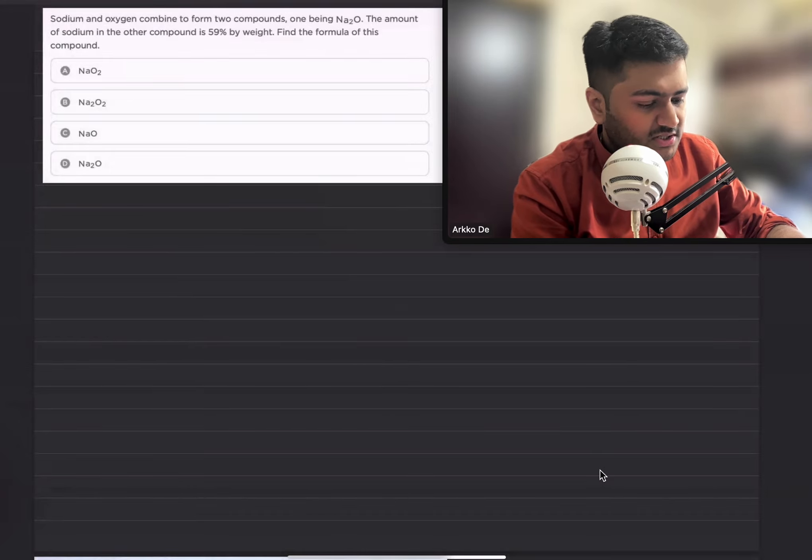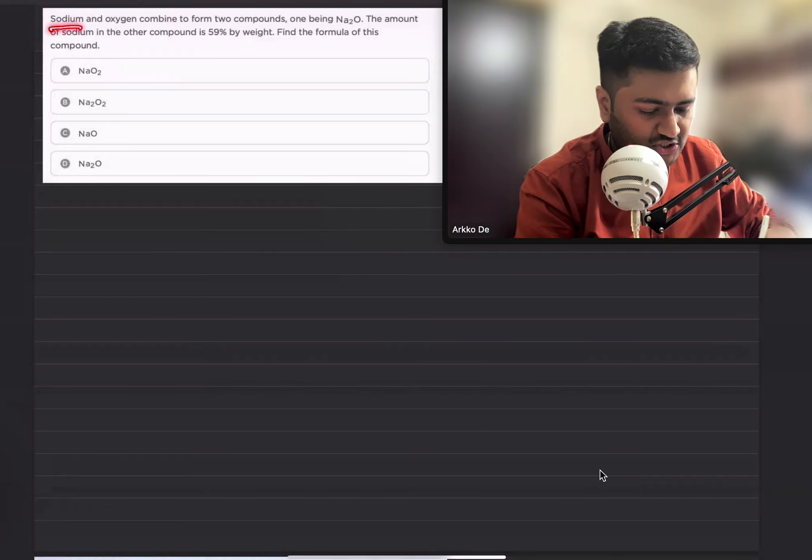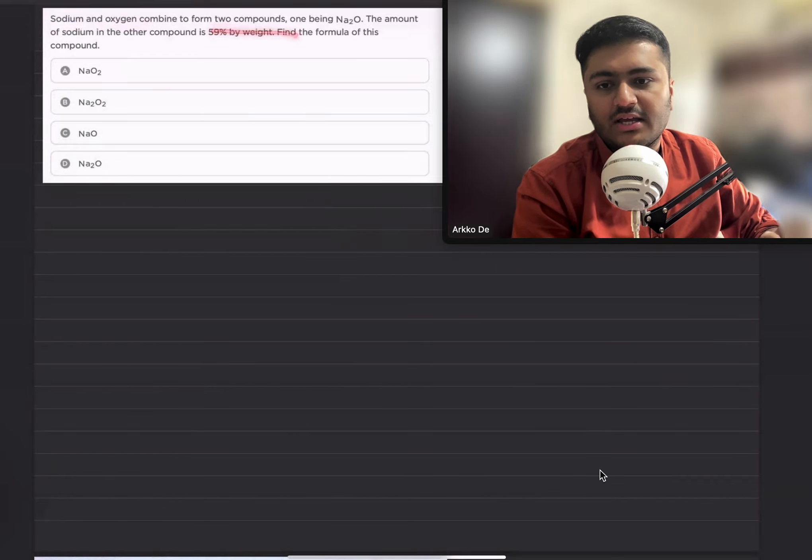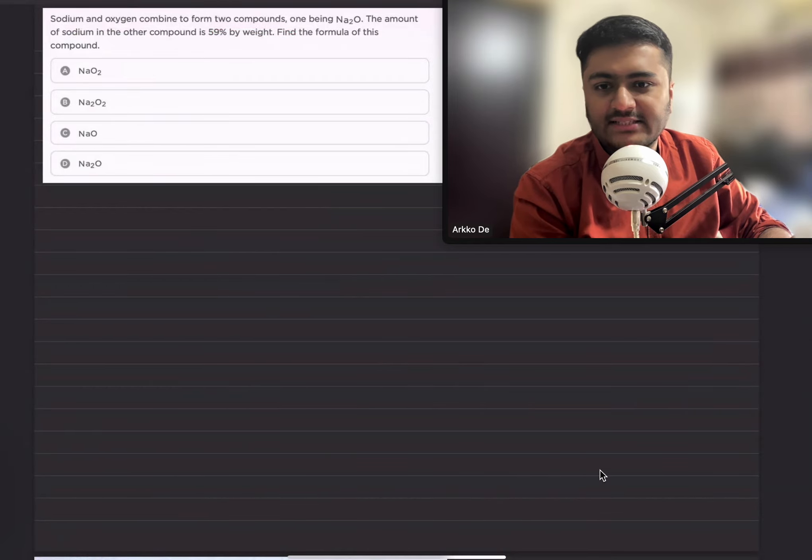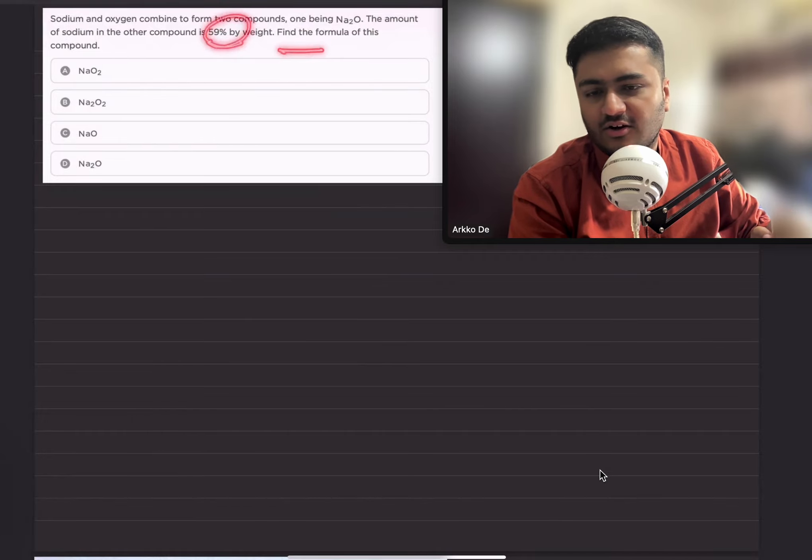Now let's look at the question. The question reads that sodium and oxygen combine to form two compounds. One compound is Na2O, and we need to find the other compound. The amount of sodium in the other compound is 59% by weight. So find the formula of this compound.